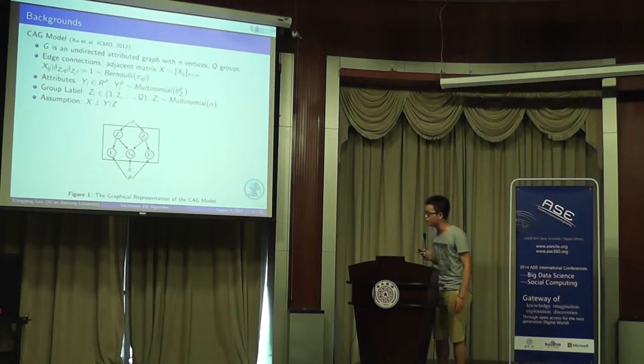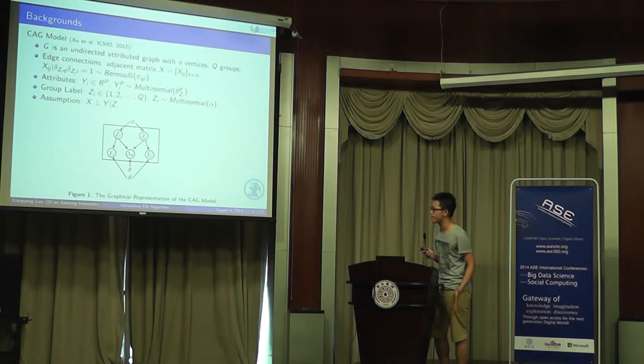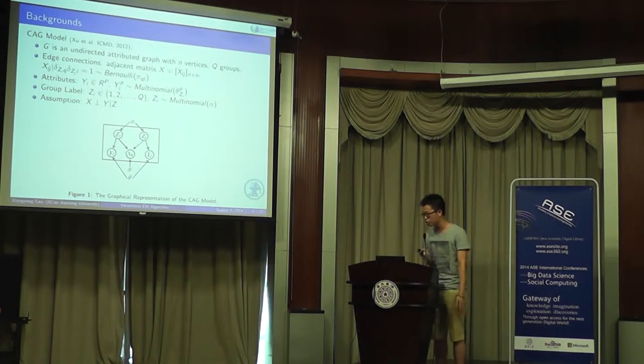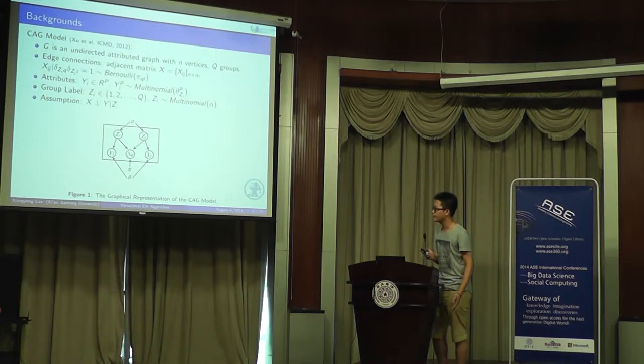Next, we introduce the CAG model. The CAG model was proposed by Xu and his colleagues. In this model, G is a directed attributed graph with N vertices and Q groups. Q is given in advance. To describe the graph, first to describe the edge connection, we use adjacency matrix X to describe it.